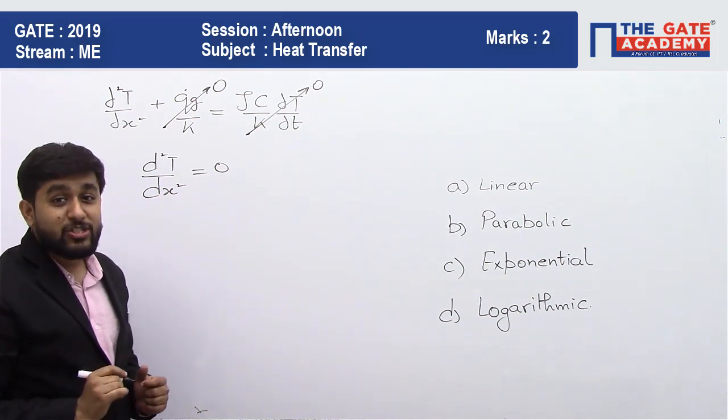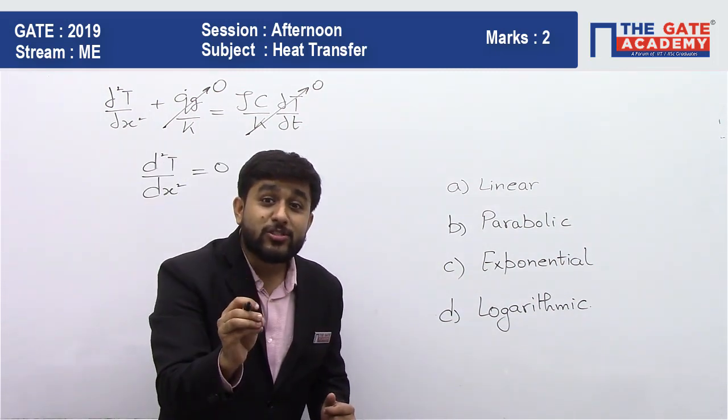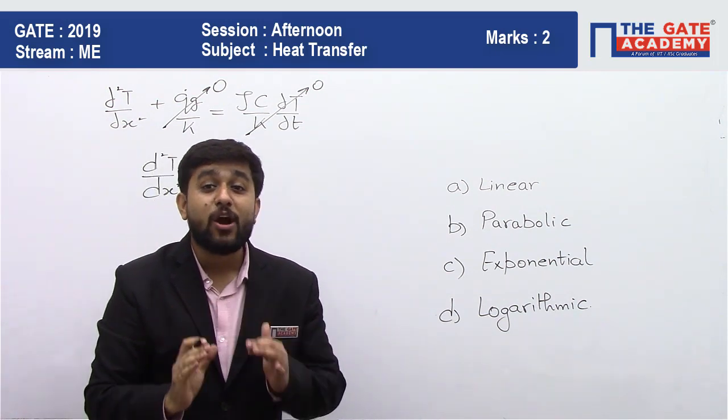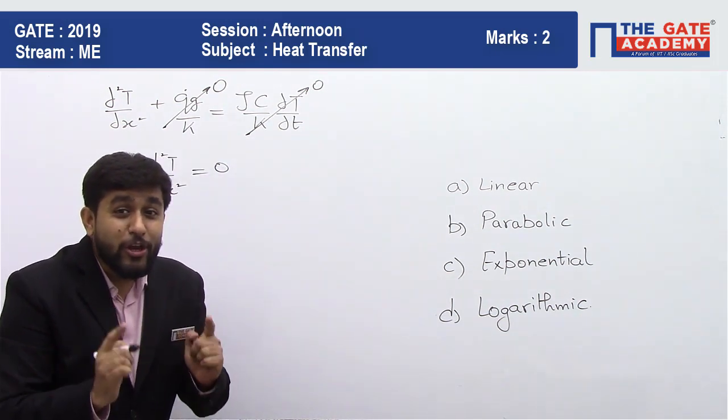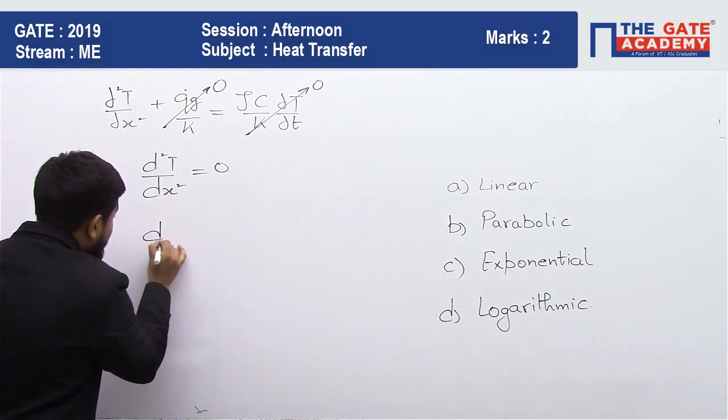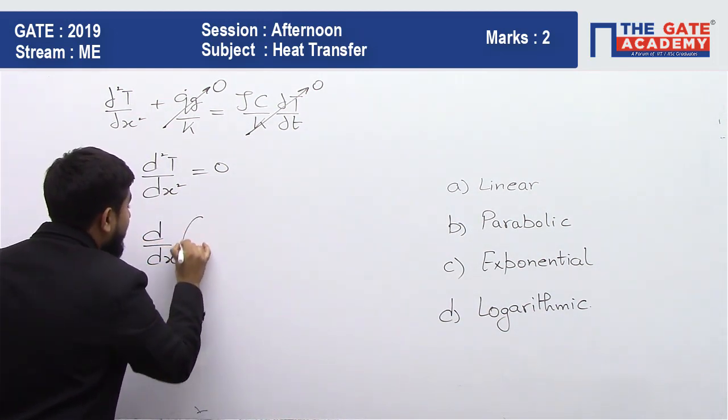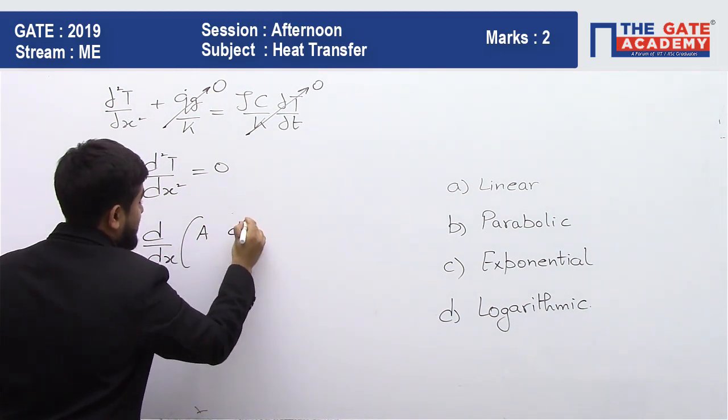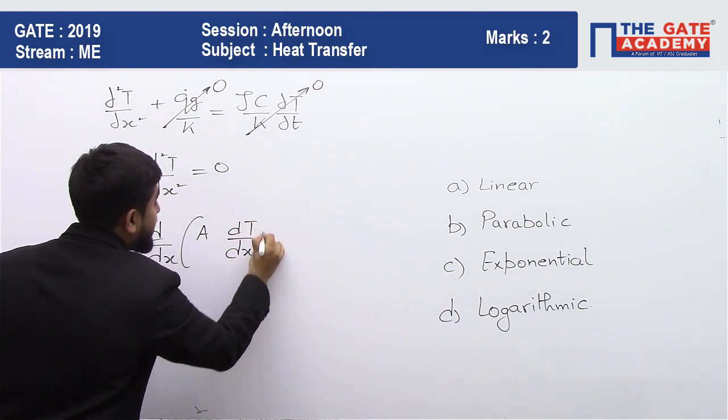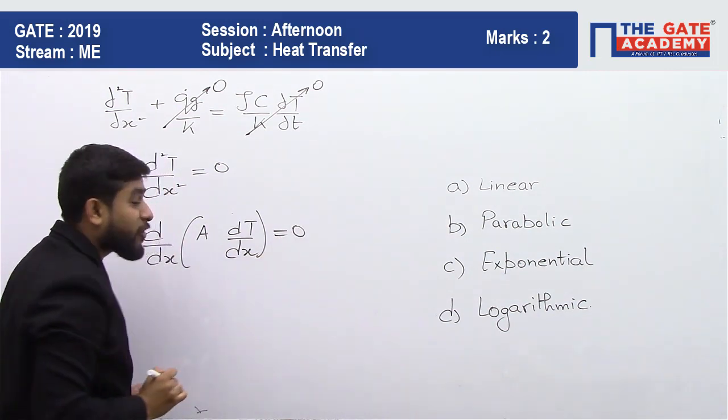But there is a catch in this. This heat conduction equation is for those solids which have uniform area of cross section. But when you talk of non-uniform area of cross section, the heat conduction equation will be written like d by dx of area into dt by dx. So this is your heat conduction equation for non-uniform cross section.